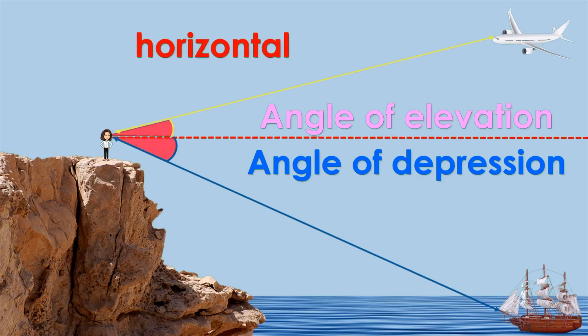Now be very careful that you're measuring with the horizontal line and not the vertical line. The vertical line does not form these angles and it's a common mistake. So remember, use a horizontal line to measure your angle of elevation and depression.